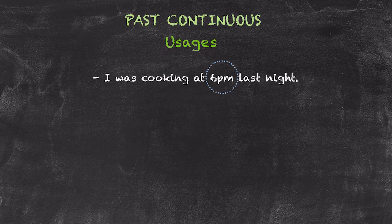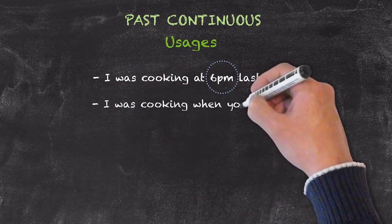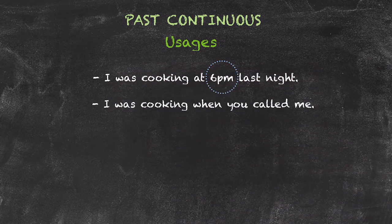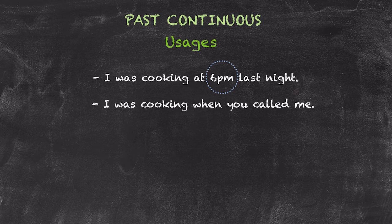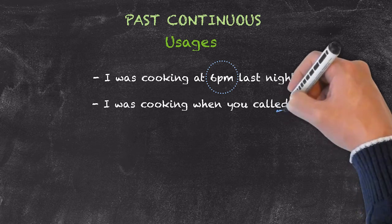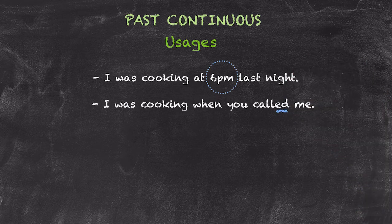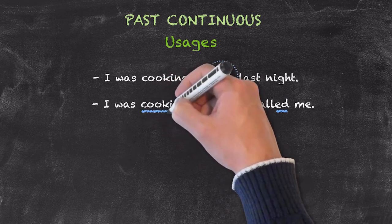I could also say: I was cooking when you called me. It's the continuation of an action that happened at a particular time. That particular time needs to be conjugated into the past simple tense, as it wasn't continuing — rather, the cooking was continuing.